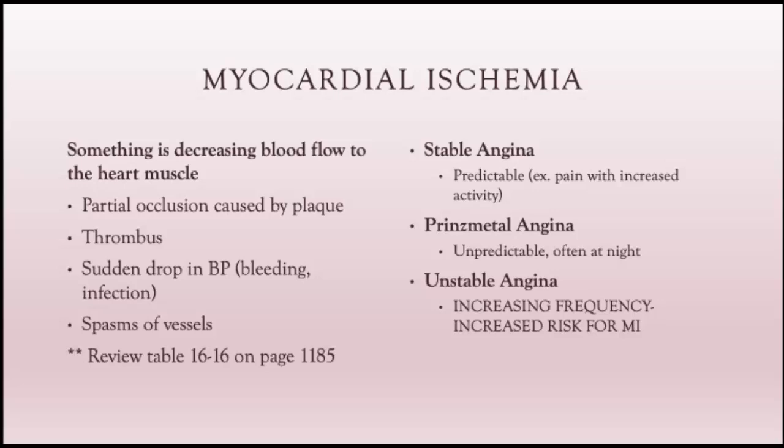The most common symptom of delayed blood flow to the heart is angina — chest pain from decreased blood flow to the heart muscle. There are three types. Stable angina is predictable: a client with known CAD may know that increasing their heart rate with activity causes chest pain that resolves with rest and medication. Prinzmetal angina is unpredictable — the patient can't predict when pain will occur, but it's generally the same type of pain and often happens at night. Unstable angina is chest pain occurring in increasing frequency, indicating an increased risk for myocardial infarction.